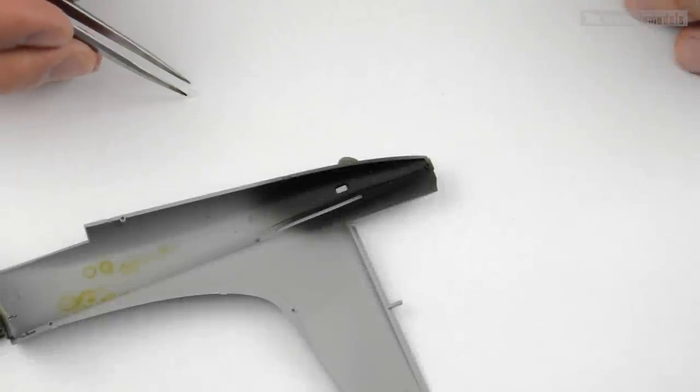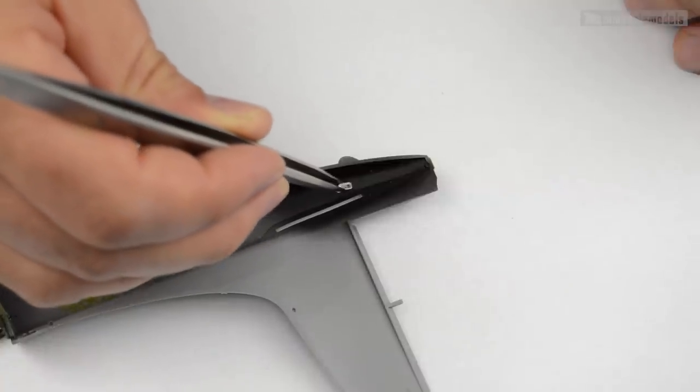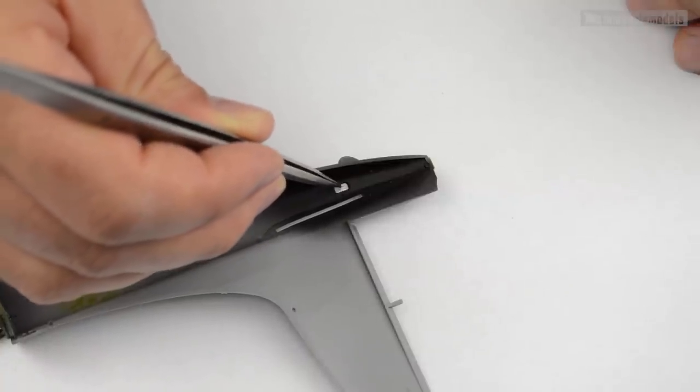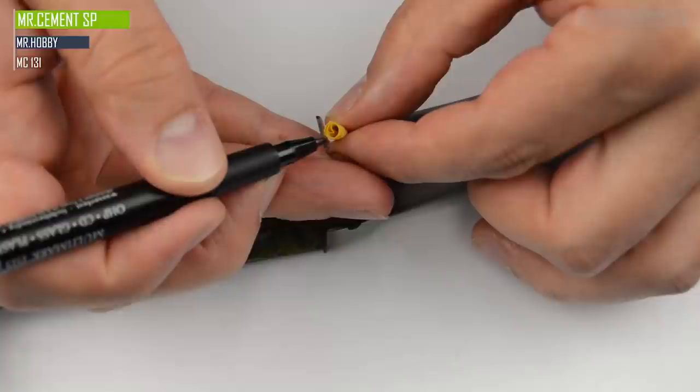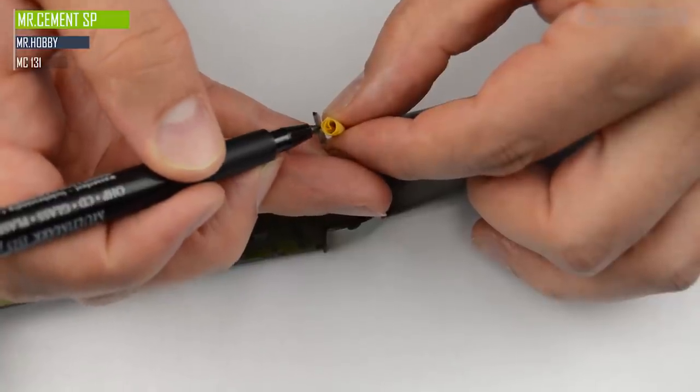First we have a couple of small transparent parts on each fuselage half. They fit pretty nicely and it only takes a drop of cement to get the job done.